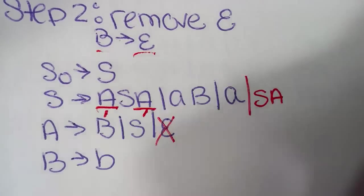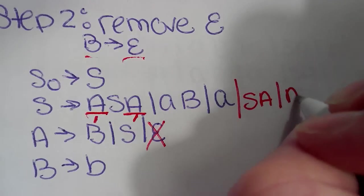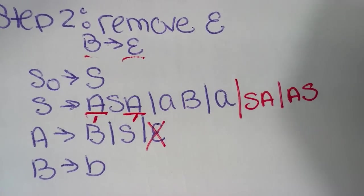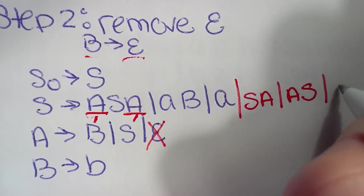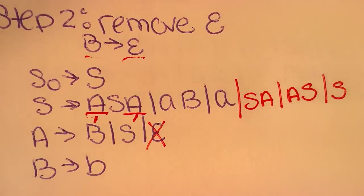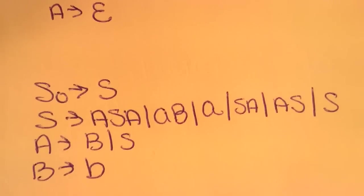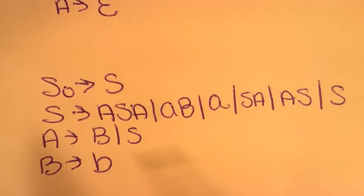Then we can take into account if this A were an epsilon, which would give us an AS. And then we have to take into account if both are epsilon, which would just give us S. So our new grammar looks like so. We still have our first initial state and now we have removed all of our epsilons.